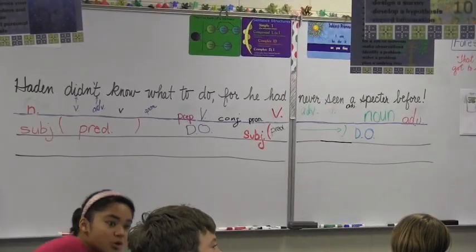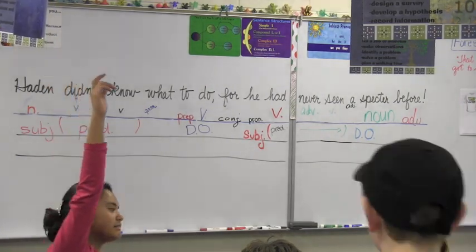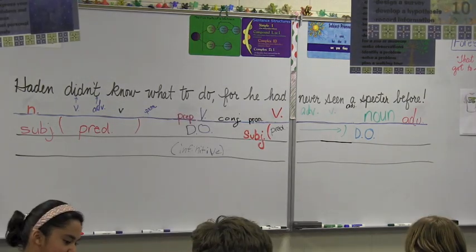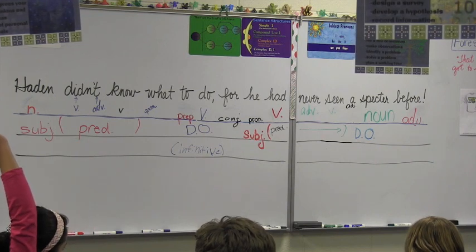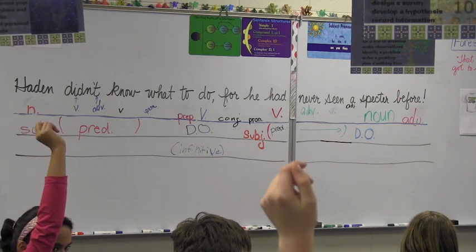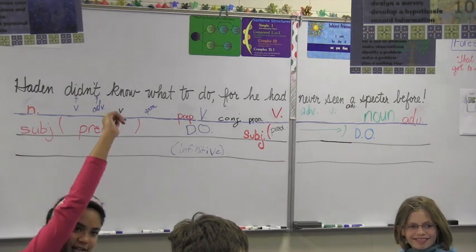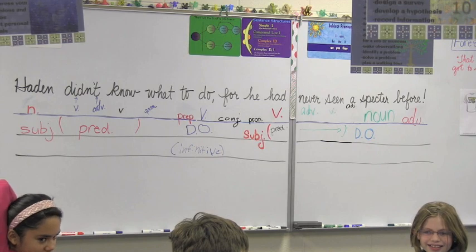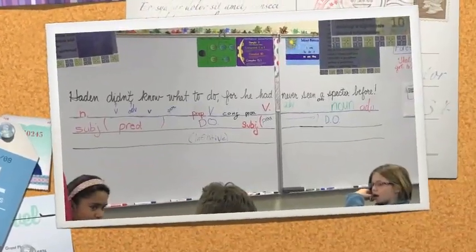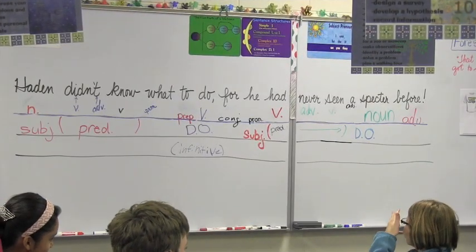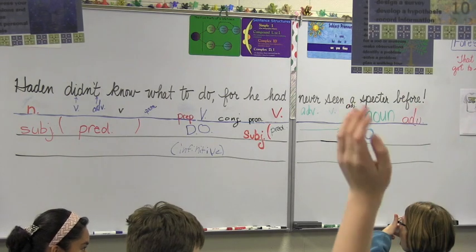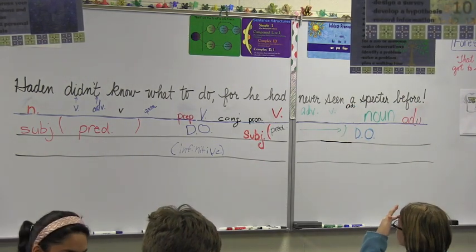We are ready to go on to line three, which is our phrase with Austin. Does anybody see any phrases besides the one that Austin is going to identify? Let's do type and then we'll do structure. So what type of sentence is this? Exclamatory. And what is your tip-off that it's an exclamatory sentence? Exclamation mark at the end. And so if it's an exclamatory sentence, how should it be read? Hayden didn't know what to do, for he had never seen a specter before!